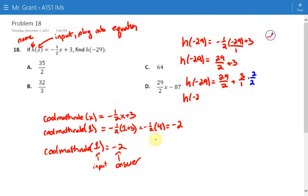So H of negative 29 is 29 over 2 plus 6 over 2. So it tells us when we substitute negative 29 into our boring rule called H we end up with 35 over 2 which seems to be A.